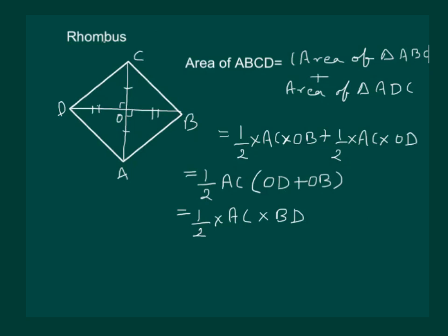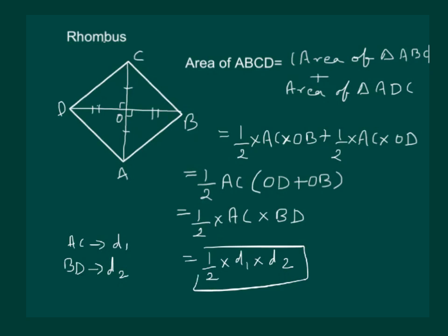Let us denote ac by d1 and bd by d2. Then the area of the rhombus is half times d1 times d2. In other words, the area of a rhombus is half the product of its diagonals. Thank you.